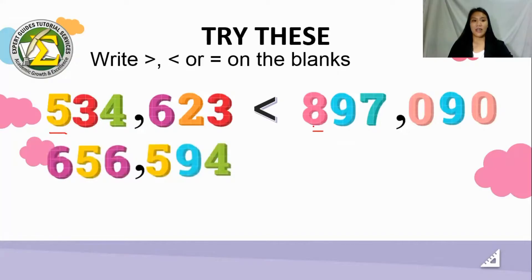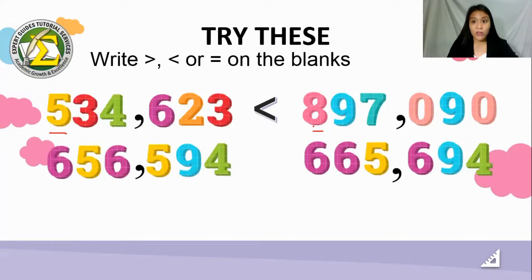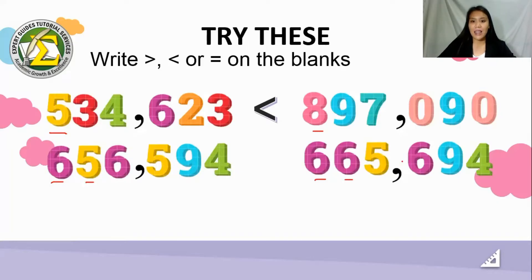For the next example, we have 656,594 and 665,694. We have to carefully look at each number because, as you can see, the digits are rearranged. We go through each digit starting from the highest place value. Both are in the hundred-thousands place and both have six, so we move to the next digit: five versus six. Our alligator eats six, so we read this as: 656,594 is less than 665,694.